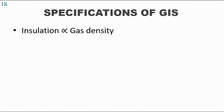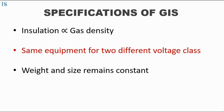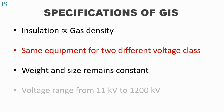Since the insulation is directly proportional to the gas density, the desired voltage class is achieved just by increasing or decreasing the gas density. Due to these flexibilities, some manufacturers offer the same equipment for two different voltage classes, keeping the weight and size of the instrument the same. GIS are available in a voltage range of 11kV to 1200kV.